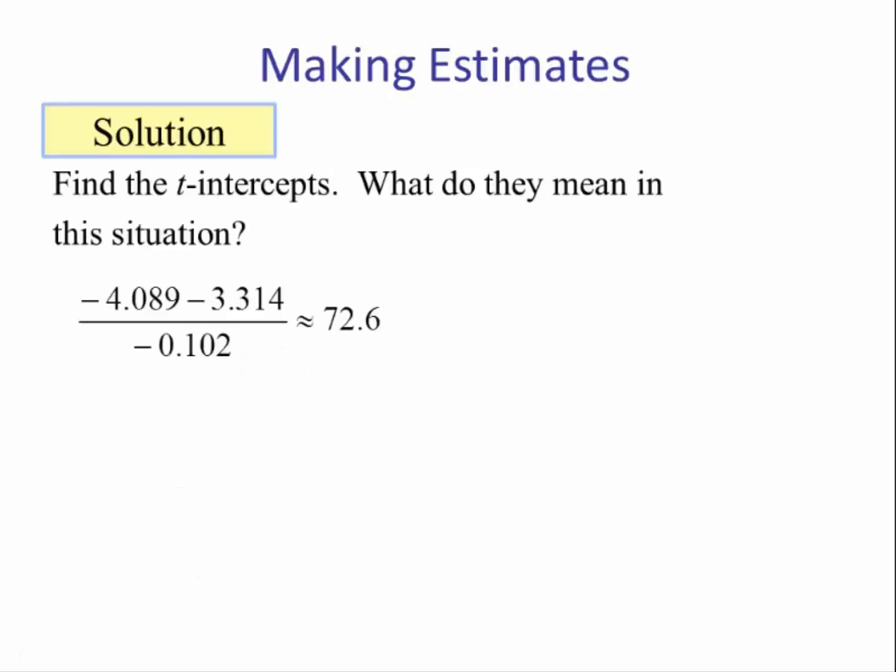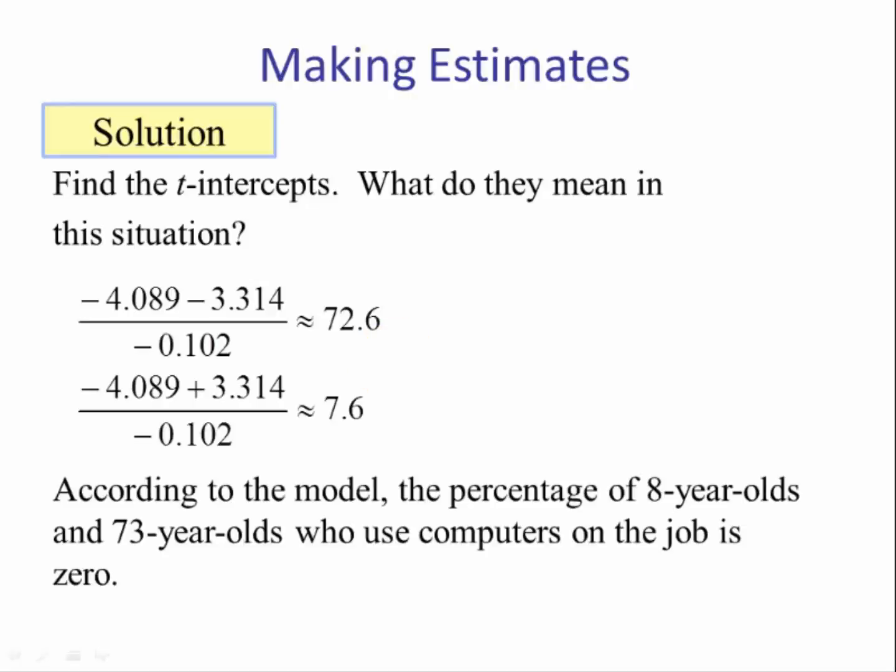So the first t-intercept is 72.6 and the second is 7.6. We would say according to the model, the percentage of 8-year-olds and 73-year-olds who use a computer on a job is 0. Now this is likely a model breakdown because 8-year-olds don't have a job and most 73-year-olds are retired.